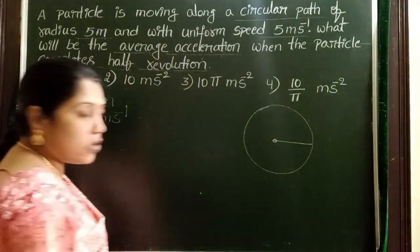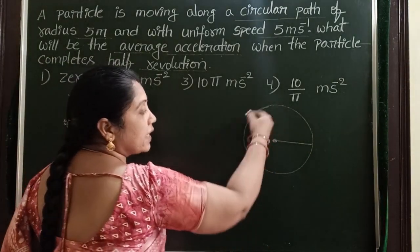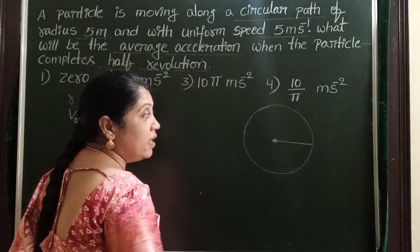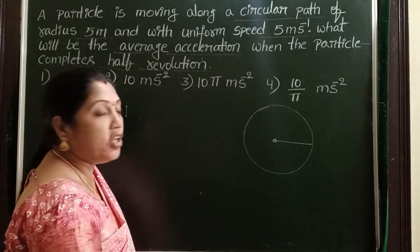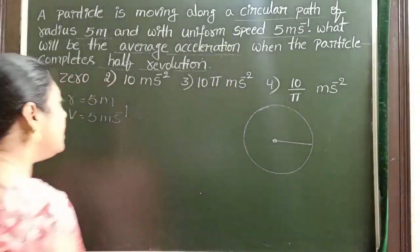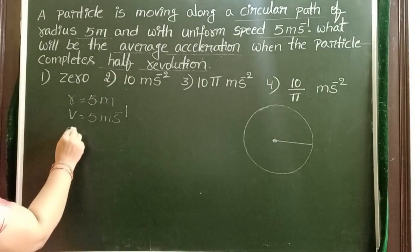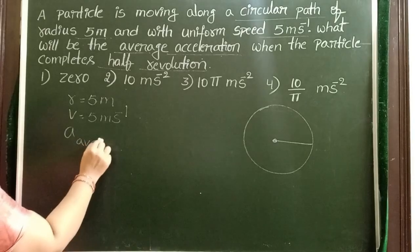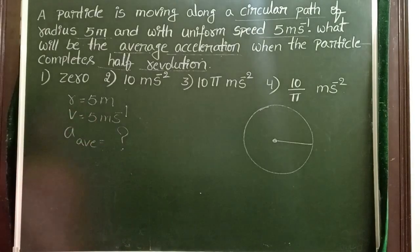When magnitude of the velocity is constant and moving along the circular path, that means the given circular motion is uniform circular motion. Here we have to calculate the average acceleration when it completes half of the revolution.